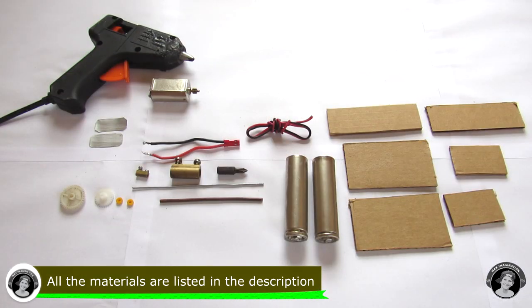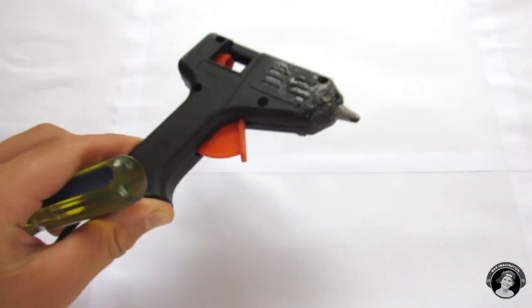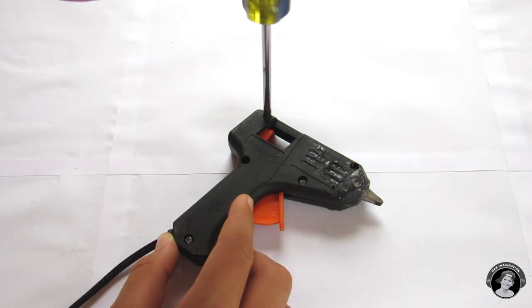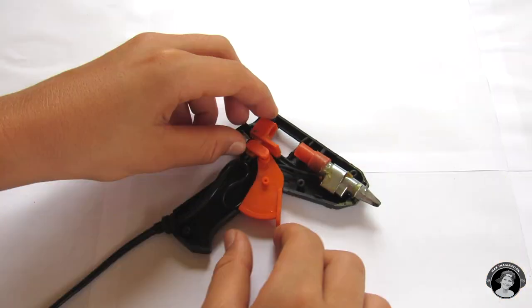This video is brought to you by. Let's start out by opening up a broken hot glue gun. Then take all of its components out.